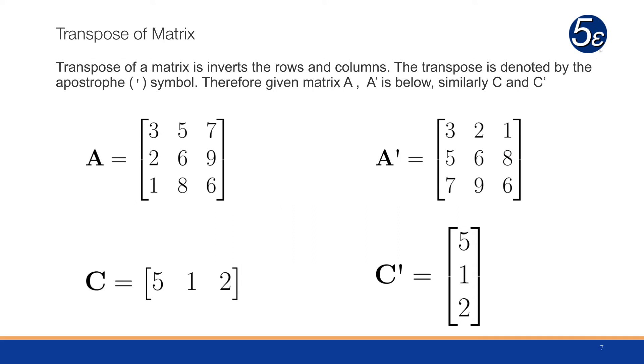The next operation is the transpose. The transpose of a matrix inverts the rows and columns, denoted by the apostrophe symbol. If we have matrix A as 3 5 7, 2 6 9, 1 8 6 going across in the rows, A transpose will be 3 2 1, 5 6 8, 7 9 6. Similarly, for a row vector C 5 1 2, C transpose will turn it into a column vector of 5, 1, 2.